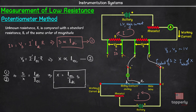In case there is any doubt about whether current flows in this loop: remember that we set the jockey such that the galvanometer shows zero deflection. Zero deflection on the galvanometer means no current is flowing through the galvanometer, and therefore there is no current in that loop.